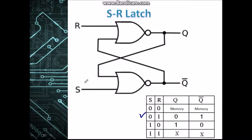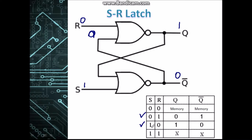Now let's look at when S is 1 and R is 0. A 1 into a NOR gate gives us 0. The 0 is fed into the other gate — a 1 and a 0 gives us 0 at Q̄, and a 0 NOR 0 gives us a 1 at Q. So the condition where S is 1 and R is 0 gives Q=1 and Q̄=0.